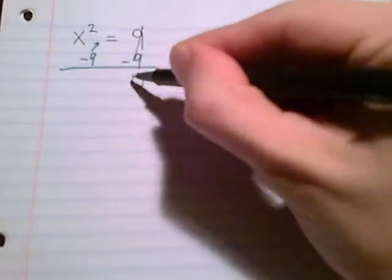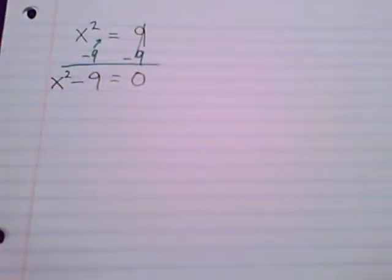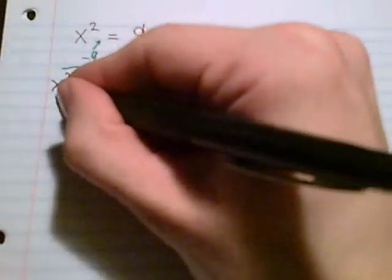Cancel, equal to zero. X squared minus nine equals zero. And now we solve by factoring. It's a binomial—hope that you remember factoring these.